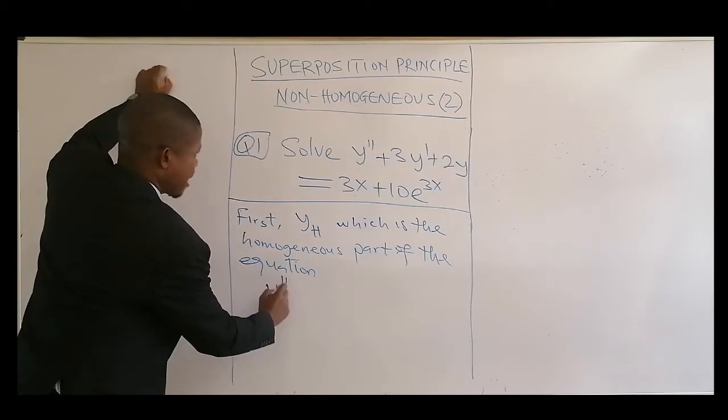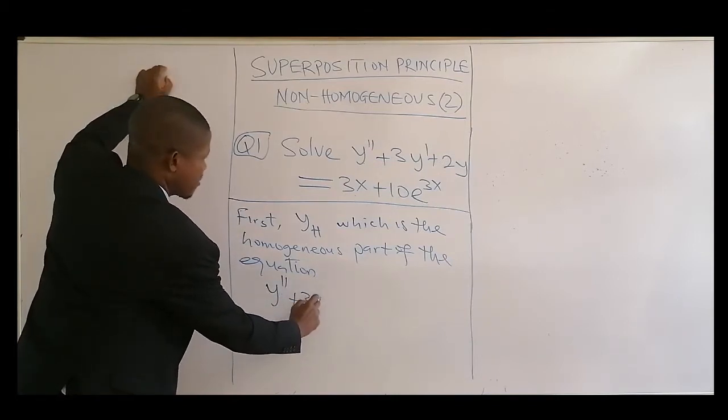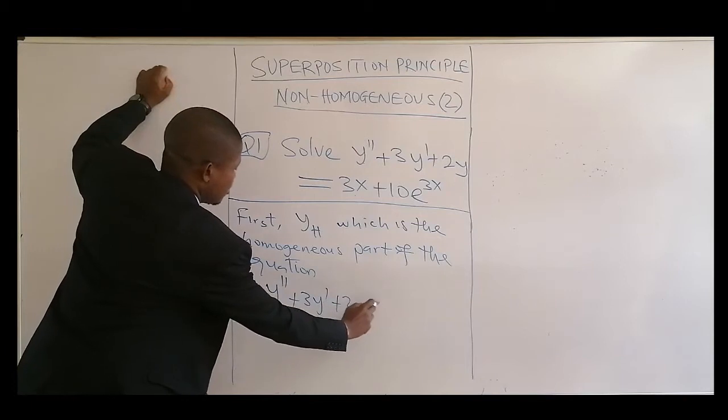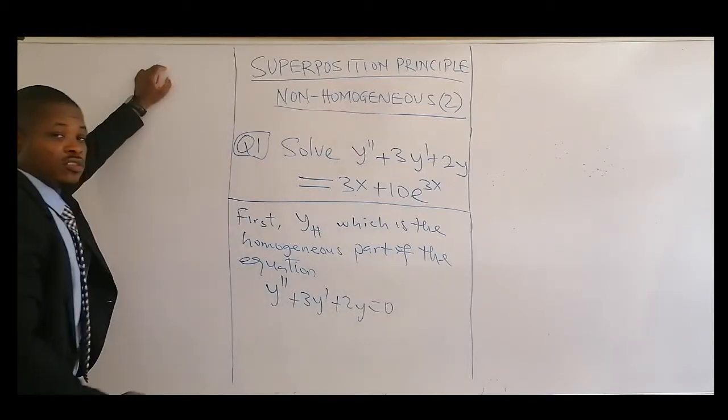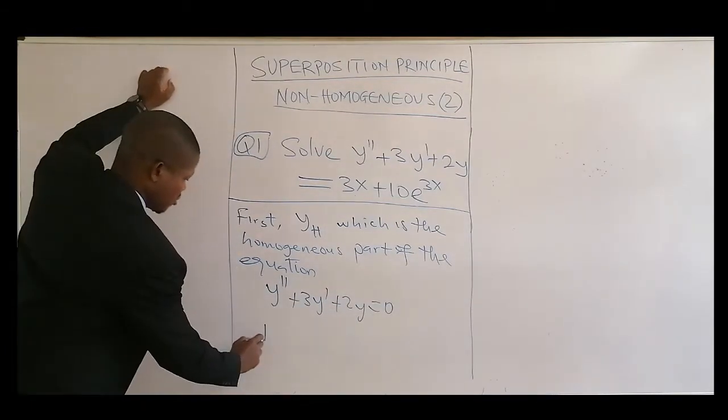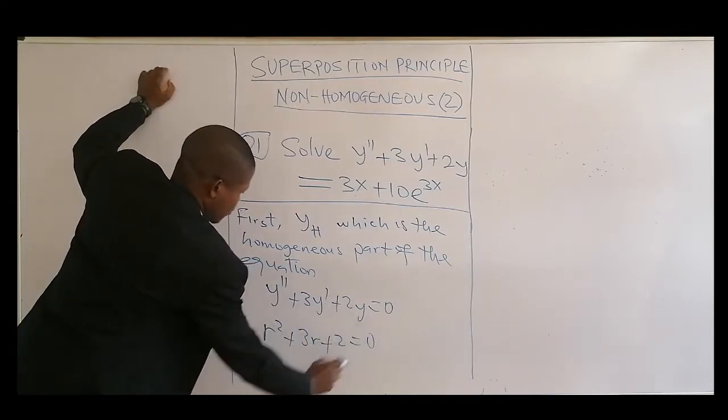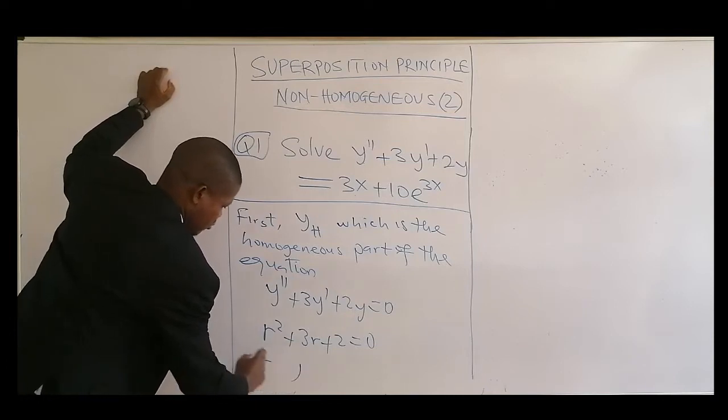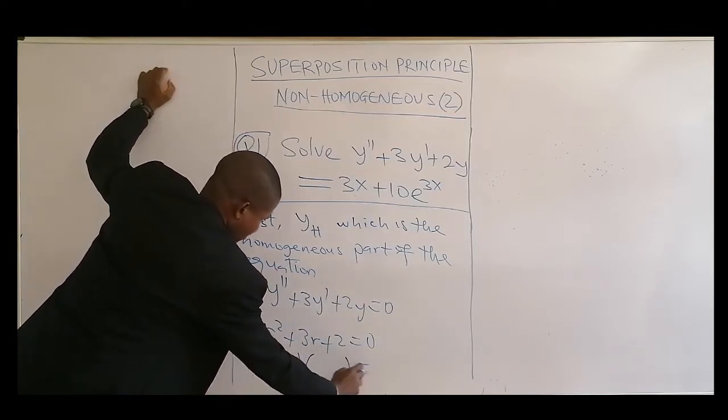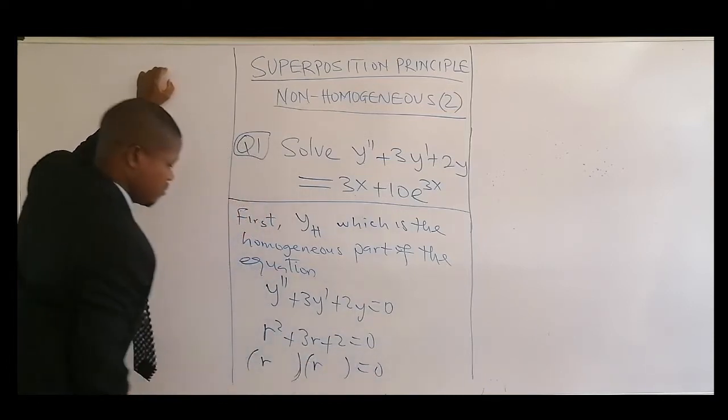And that will be equal to Y double prime plus 3Y prime plus 2Y equal to 0. Then we get the auxiliary equation of this, which will be equal to r² + 3r + 2 = 0.